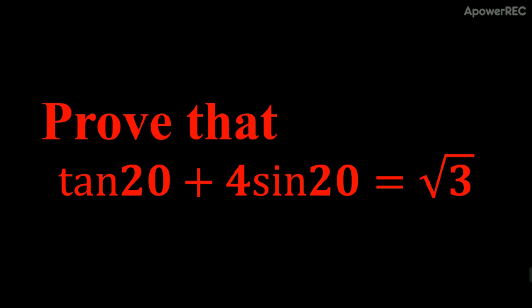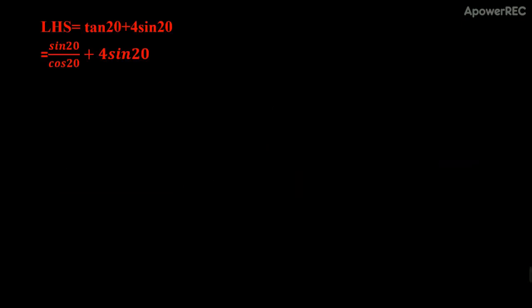Hello friends, welcome to this new video. We need to prove that tan(20°) + 4sin(20°) = √3. This problem is related to trigonometry. We start by writing tan(20°) as sin(20°)/cos(20°), since tan(θ) = sin(θ)/cos(θ), plus 4sin(20°) as it is.